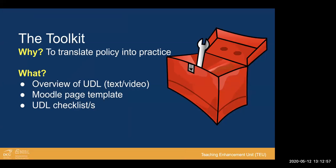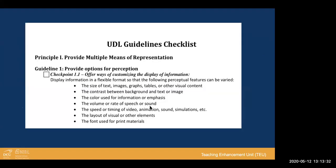The toolkit itself comprises three different parts. The first is an introduction or overview of UDL, available in both text and video format in line with Universal Design for Learning principles. The second piece is a Moodle template, which I'm going to show you shortly, that seeks to address the issues raised in the Index survey around creating consistency in the use of the VLE. We also have a series of UDL checklists which we hope will support engagement with UDL principles for staff.